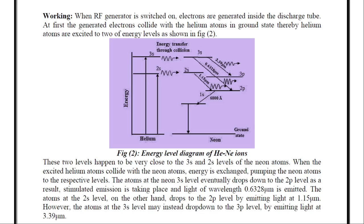These two levels happen to be very close to the 3s and 2s levels of the neon atoms. That means, the two excited states of helium atoms are nearly at the 3s and 2s levels of the neon atoms as shown in the diagram. When the excited helium atoms collide with the neon atoms, energy is exchanged pumping the neon atoms to the respective levels.